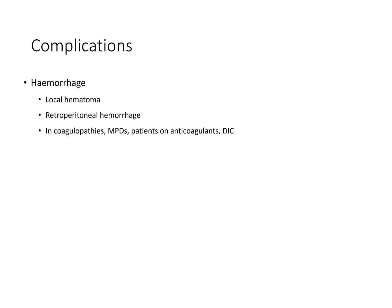Complications to the procedure include hemorrhage, which can be in the form of local hematoma. Retroperitoneal hemorrhage in the case of sternal aspirates. And in coagulopathies, myeloproliferative disorders, patients on anticoagulants, and patients having DIC, it is fairly common. Pain at the local site is common, which can be treated by giving adequate analgesia. Local infection generally occurs after the third day of the procedure. Perforation of mesal vessels, like the iliac, can occur.